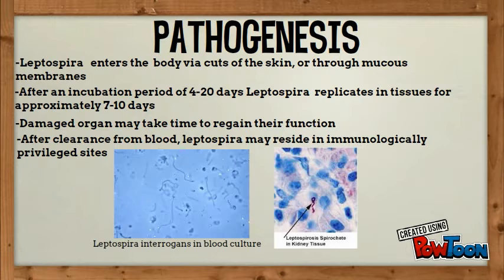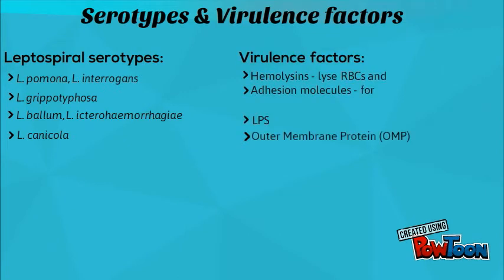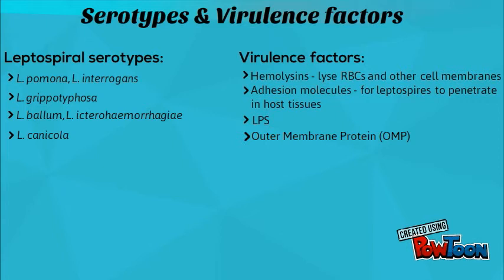However, in some cases, severely damaged organs may not recover, leading to chronic disease or death. Despite clearance from the blood, Leptospira may remain in immunologically privileged sites including the eye for weeks to months. Most serotypes share the same pathogenic mechanism and are associated with particular animals. For example, L. pomona and L. interrogans are seen in cattle and pigs, while L. canicola is associated with dogs. Several candidate virulence factors have been identified that might contribute to the pathogenesis of Leptospiral infection.